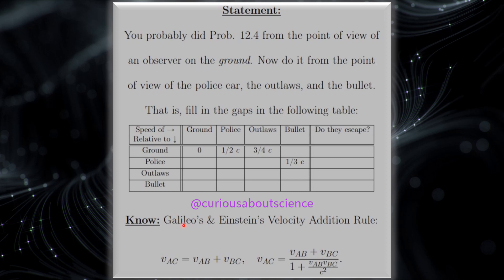What we need to know primarily is Einstein's velocity addition rule, which is VAC is equal to VAB plus VBC over 1 plus this factor here. Pretty simple, I would say, but let's dive in because it's really curious.